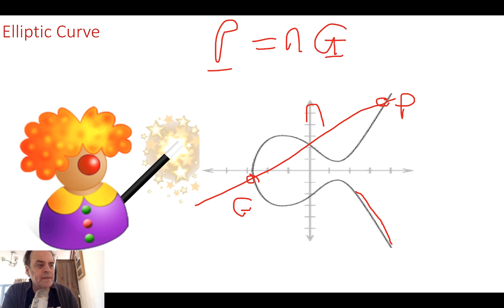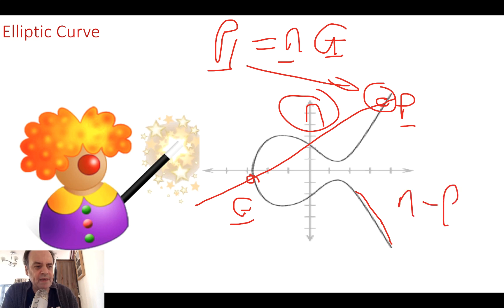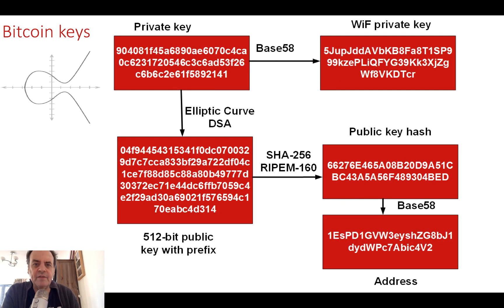G is known — that's the generator — and P becomes the public key. So the public key is this point on the curve. If n is large enough, it's extremely difficult to take P and find out what the value of n is. So n becomes our private key and P becomes our public key. That's the way elliptic curve actually works.